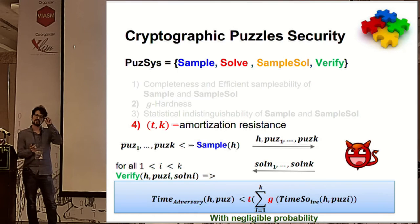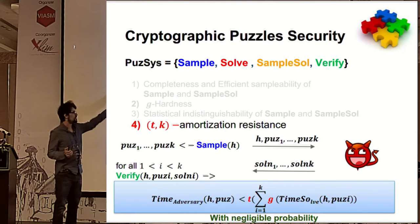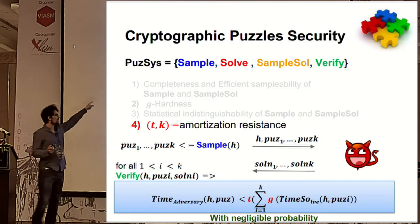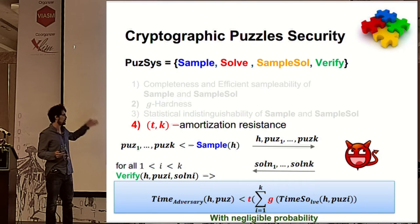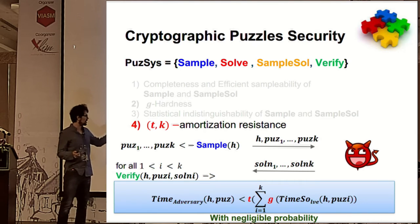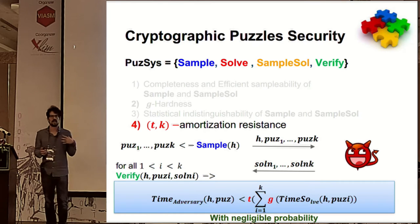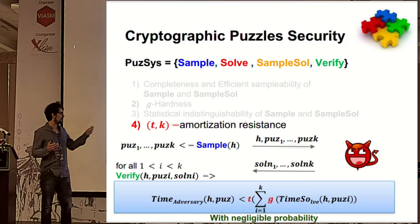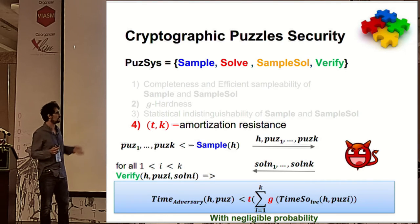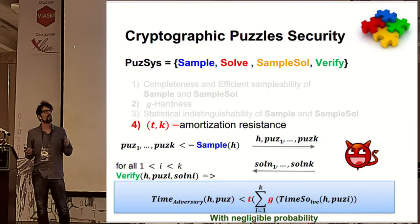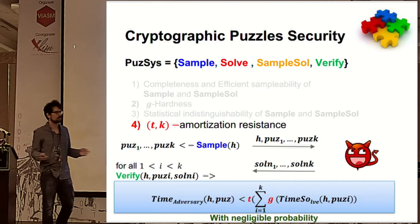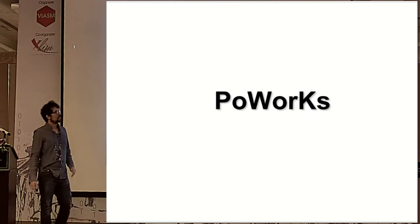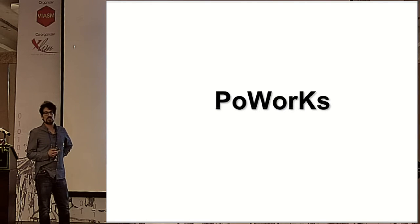Amortization resistance is defined with respect to a parameter k (the batch size) and the scaling function. Informally, if given k puzzles you have no advantage beyond a t-scaled factor relative to solving one by one. For example, one puzzle might take 2^λ steps and k puzzles take no more than (1/k)·2^λ steps. If k is polynomial you remain in the hard regime. This formal definition of puzzles enables us to formally define PoWoK.